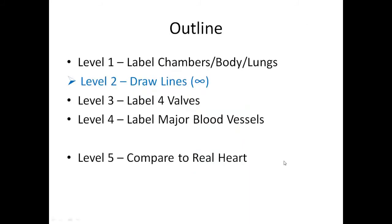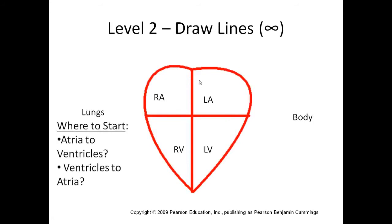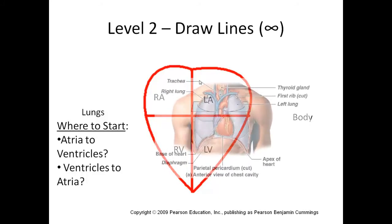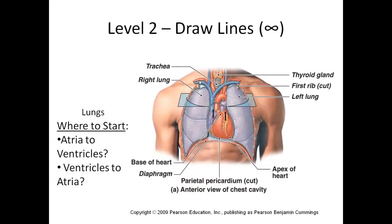Now moving on to level two — we're going to draw the lines to connect everything. The pattern you're going to see is an infinity sign. We need to decide where to start. Inside the heart, is blood going to flow from atrium to ventricle, or from ventricle to atrium? Looking at the body picture, you can see the flow going from top to bottom — from atria to ventricles.